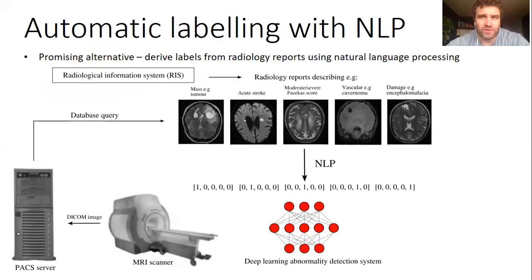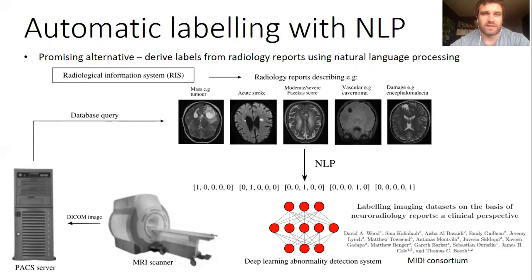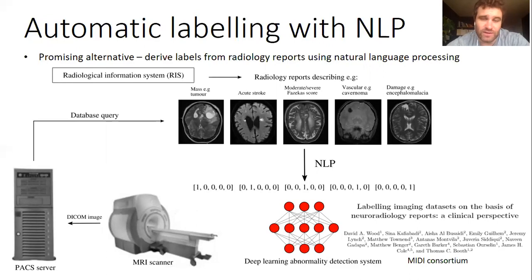A promising alternative approach is to automate this task by deriving labels from radiology reports using natural language processing, and then assigning these labels to the corresponding scans without having to manually inspect each image. This assumes that radiology reports faithfully reflect the contents of images — you can read about the extent to which that's true in our follow-up work — but it's a very attractive idea because it allows huge collections of archived images, in our case over a hundred thousand MRI scans, to be labeled practically instantaneously once the model has been trained.